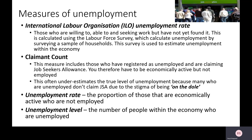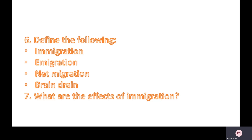The claimant count often underestimates the true level of unemployment because not everyone unemployed will claim jobseeker's allowance — due to stigma, or because savings or family wealth are too high to be eligible. The unemployment level is simply the number of people in the economy who are unemployed. The unemployment rate measures the proportion of those who are economically active who are not employed. In the UK in September 2020, the unemployment rate was 4.1% of the workforce.